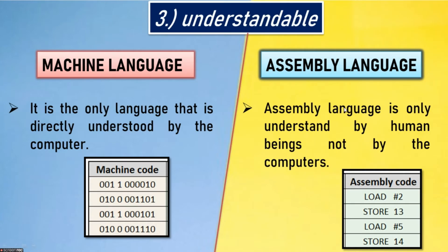Third point — understandability. Machine language is the only language that is directly understood by the computer, as programs are written in the form of zeros and ones. Assembly language, on the other hand, is only understood by human beings, not by computers.